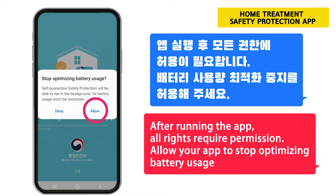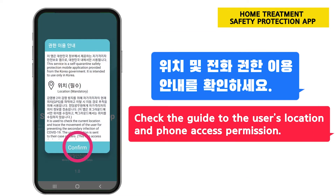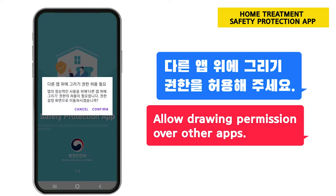After running the app, all rights require permission. Allow your app to stop optimizing battery usage. Check the guide to the user's location and phone access permission. Allow drawing permission over other apps.